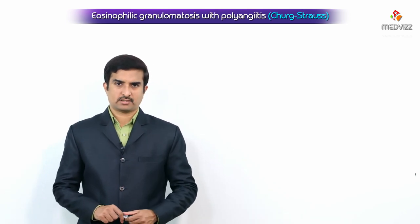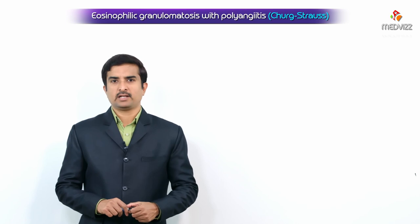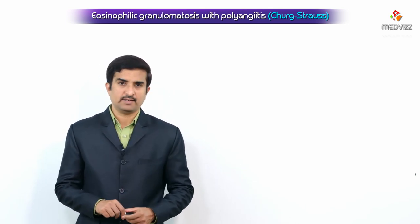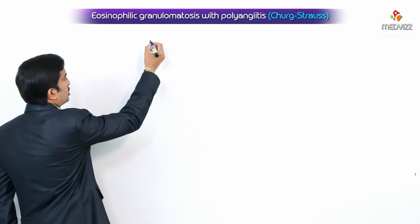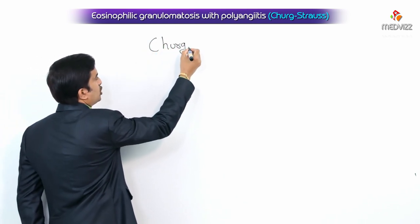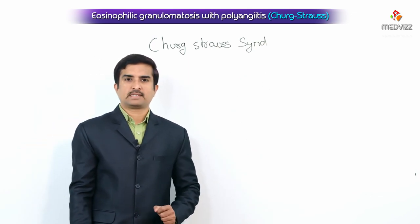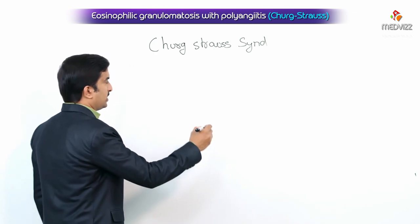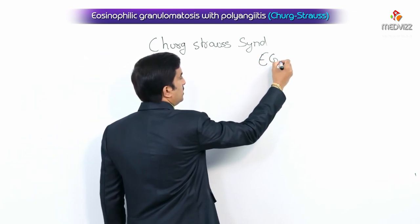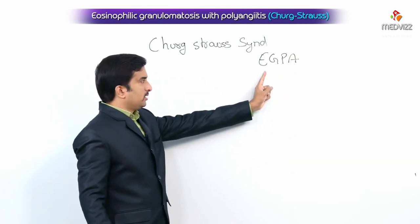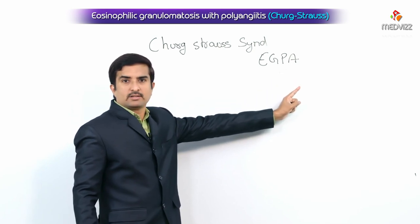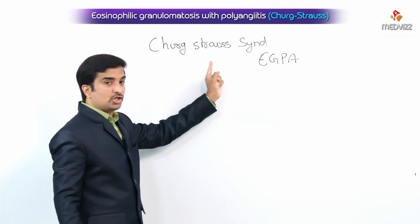Hi guys. In the pathology of blood vessels, the next important topic is eosinophilic granulomatosis with polyangiitis. At present we are calling this disease as eosinophilic granulomatosis with polyangiitis, but previously we used to call it as Churg-Strauss syndrome. This Churg-Strauss syndrome is abbreviated as EGPA.